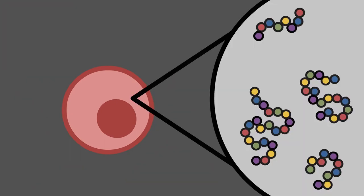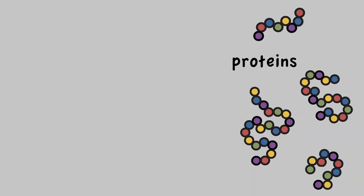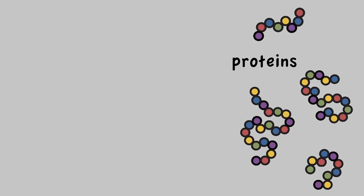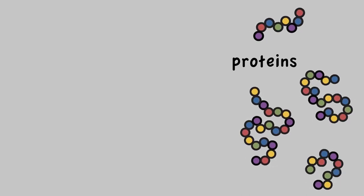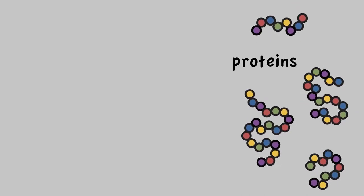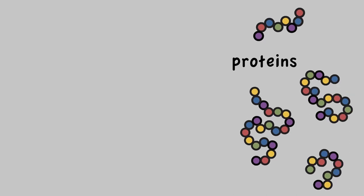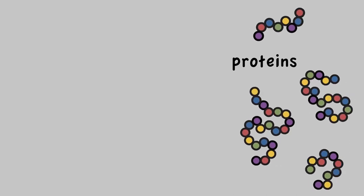Each of these cells is a factory that's constantly making complex molecules called proteins. These proteins are like the protein found in many of the foods you eat. Proteins perform most of the work in your cells and are required for the structure, function, and regulation of your body. There are many different types of proteins, each with a distinct role.